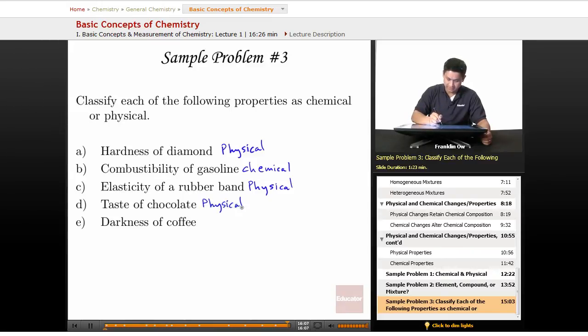And finally, the darkness of coffee. This describes color, which we use our senses to detect. And so darkness of coffee is going to be an example also of a physical change.